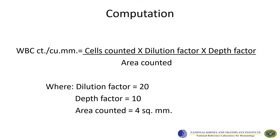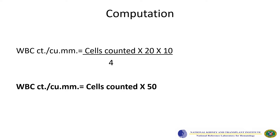We use this formula to arrive at the WBC count per cubic millimeter: multiply the count by the dilution factor, multiplied by the depth factor, divided by the area counted. The dilution factor is usually 20, since we dilute the blood 1 to 20. To simplify: count multiplied by 20, multiplied by 10, divided by 4 — you can simply use 50 as a factor to get the WBC count per cubic millimeter. Note that this factor applies only when diluting 1 to 20 and counting 4 corner squares.